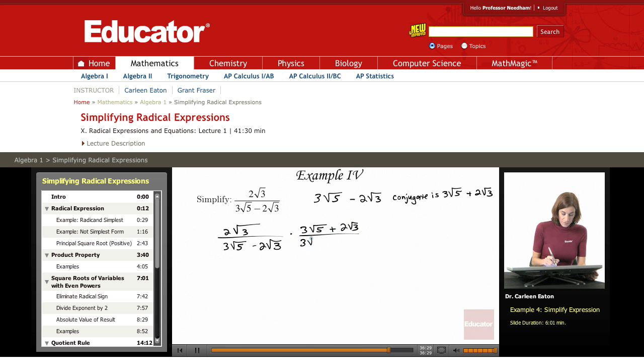3√5 minus 2√3. So we're multiplying the top and bottom by this expression. I need to go ahead and do some multiplication and simplification. First, looking at the numerator.